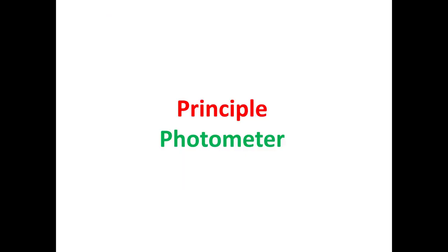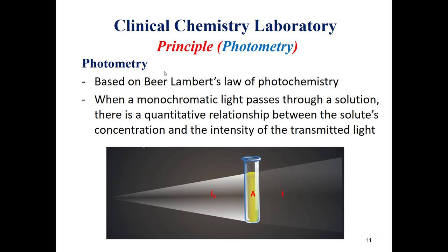Now we'll talk about the principle of the photometer. The photometer is based on Beer-Lambert law. We have two types of systems for photometers: monochromatic and bichromatic. Monochromatic uses only one specific wavelength for the measurement of an analyte, whereas the bichromatic system uses two wavelengths, which is usually used by Roche Diagnostics. One wavelength is used for the measurement of the analyte or chromogen, and the second wavelength is for the measurement and elimination of light interference.